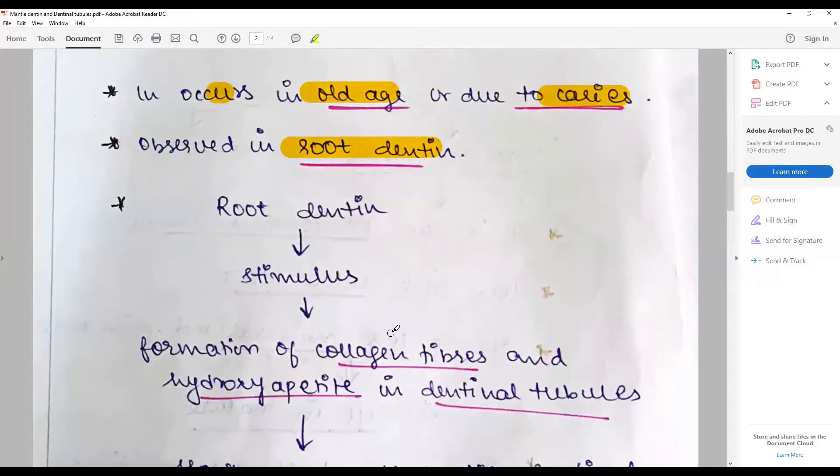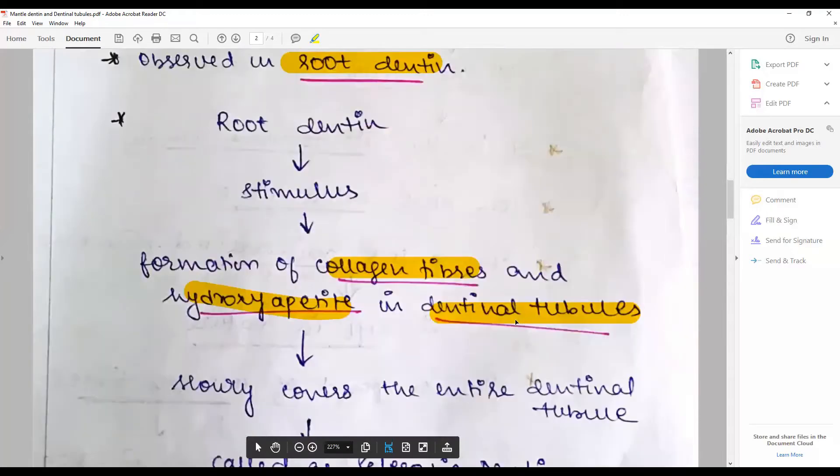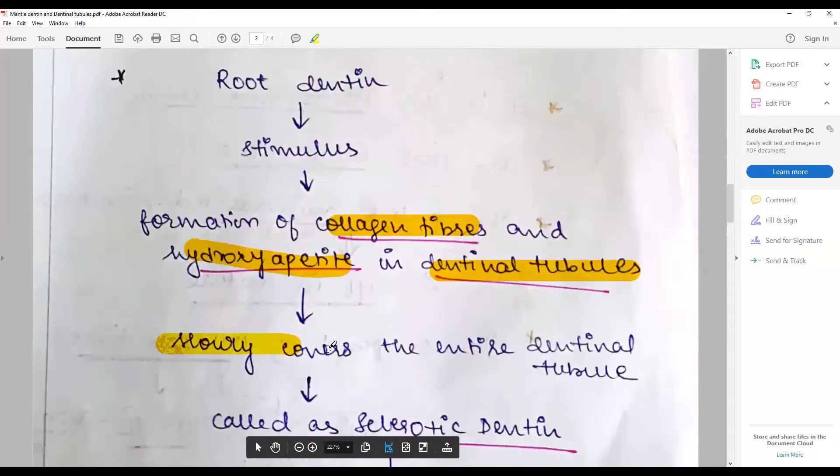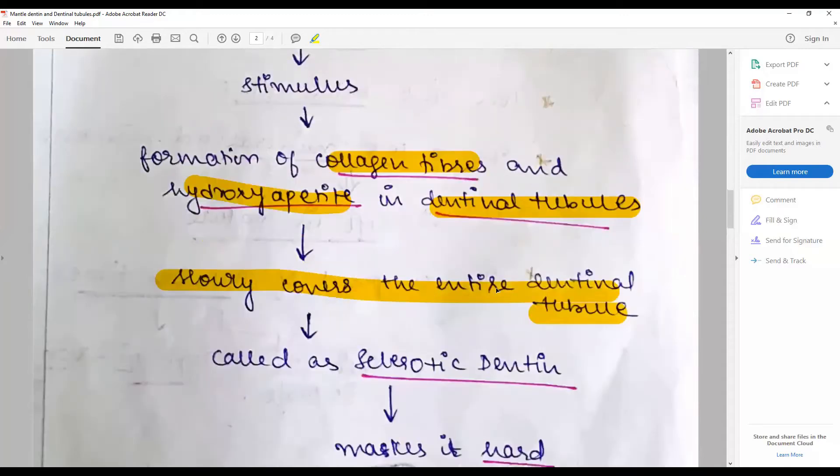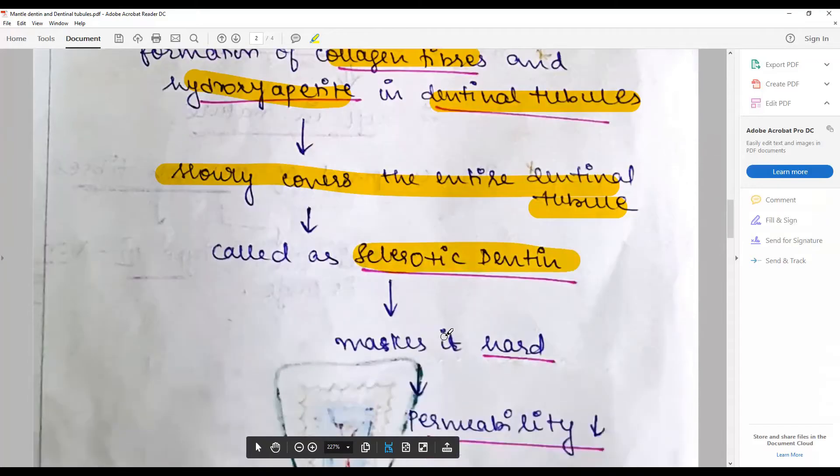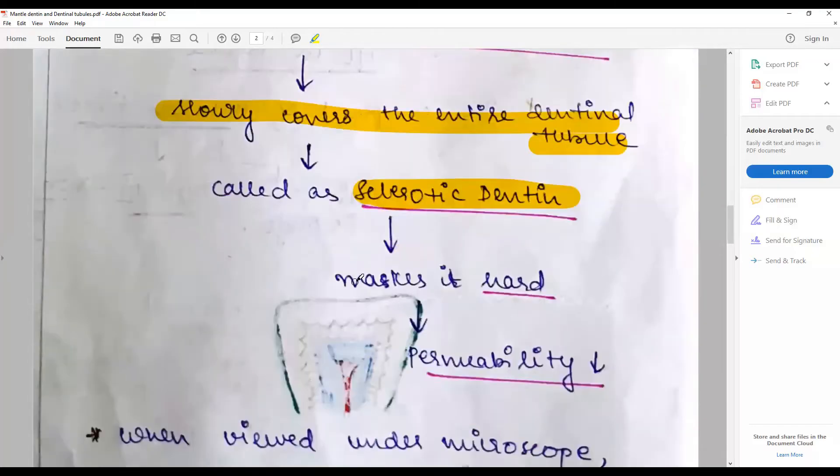In the process there is formation of collagen fibers and hydroxyapatite crystals filling the dentinal tubules, covering the entire dentinal tubules. The refractive index of the dentine and the tubules becomes the same, leading to formation of a transparent structure called sclerotic dentine.